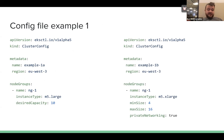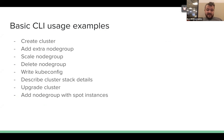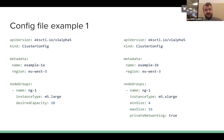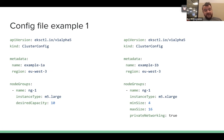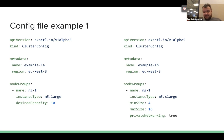If you'd like to get more advanced, you'd use a config file. Here's an example: a simple config file on the left has a cluster in us-east-1 with one node group ng1 using instance type m5.large with desired capacity 10. The one on the right uses a larger instance, sets minimum and maximum size for autoscaling, and uses private networking.